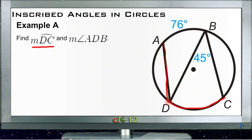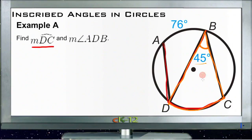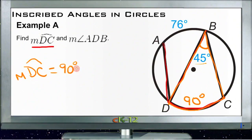We know that arc DC is opposite inscribed angle DBC. Our rule tells us that the intercepted arc is always twice the inscribed angle measure. So if inscribed angle DBC is 45 degrees, then the intercepted arc DC must be 90 degrees.